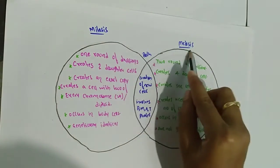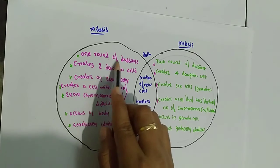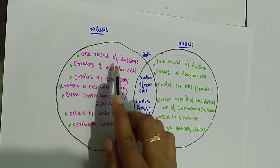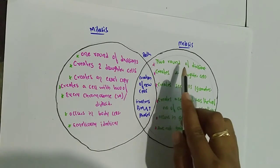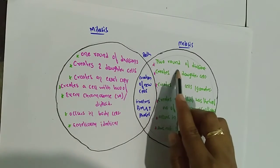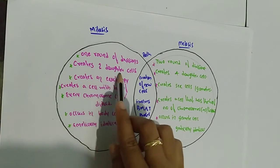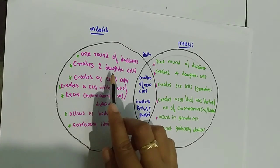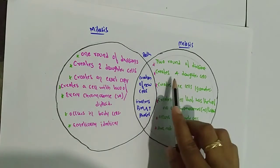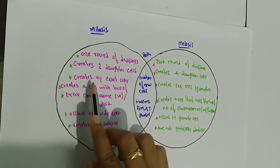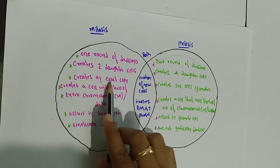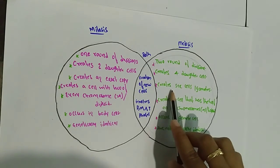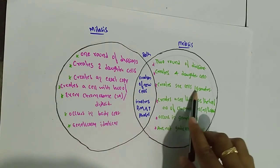Differences between mitosis and meiosis: In mitosis, one round of division takes place, creating two daughter cells. In meiosis, two successive rounds of division take place, creating four daughter cells. Mitosis creates an exact copy identical to the parent, while meiosis creates sex cells or gametes. Mitosis creates diploid cells with two of every chromosome, while meiosis results in cells with half the number of chromosomes of the parent cell.